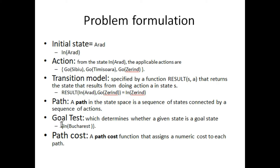So we have a sequence of actions with states that we connect, and together these form a path. For the goal test, we determine whether a newly created state is Bucharest. We check whether this state is generated, and if it is, then we have reached the goal.